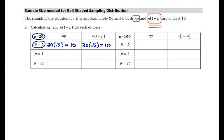When p is equal to 0.1, I have n, which is 20, multiplied by p, which is 0.1, and this comes out to be 2. Then I have n, which is 20, and 1 minus p, which is 0.9 in this case. This comes out to be 18.